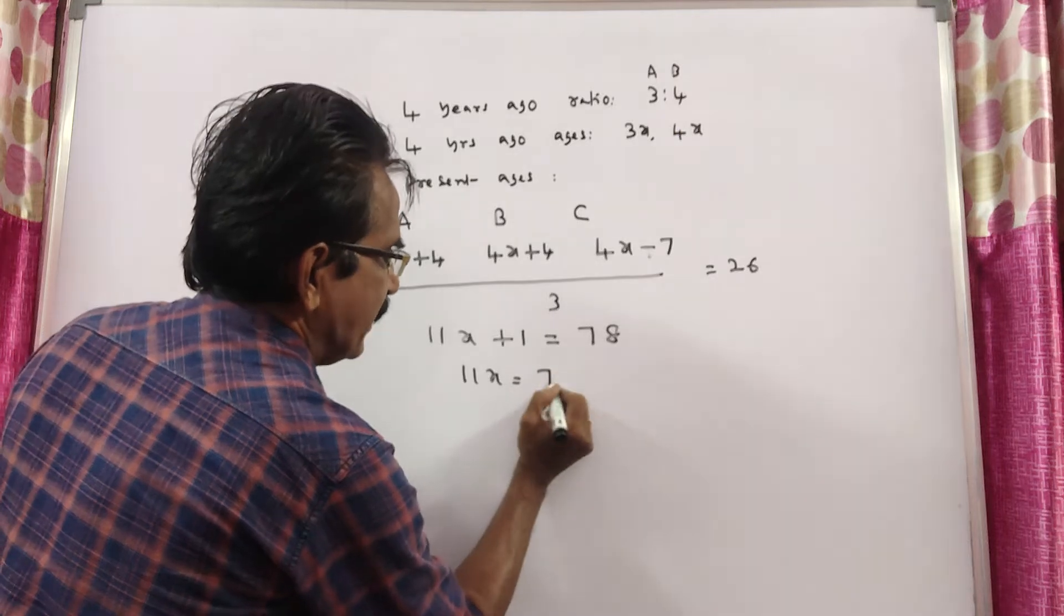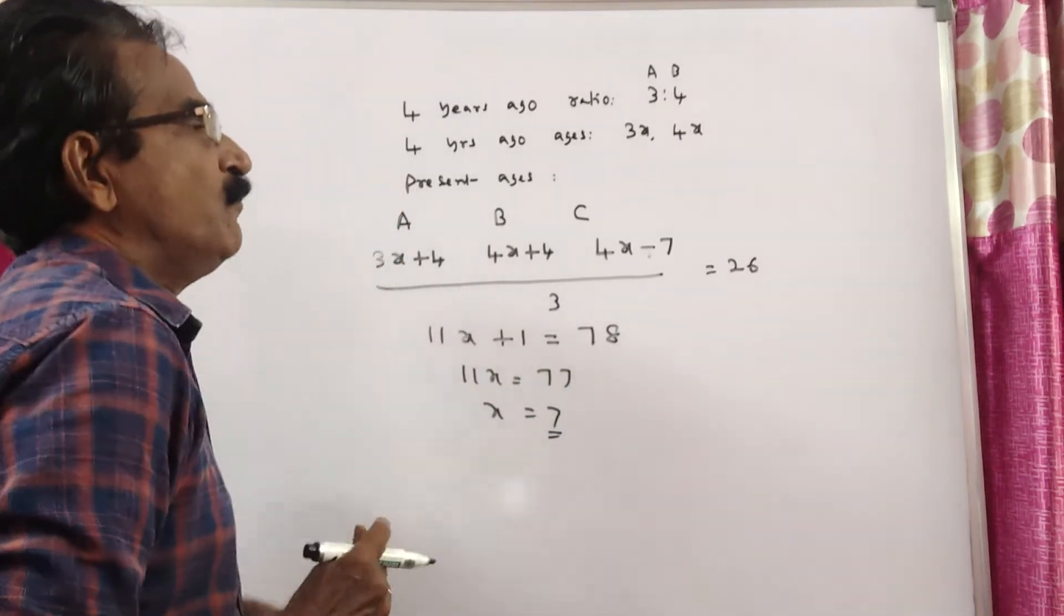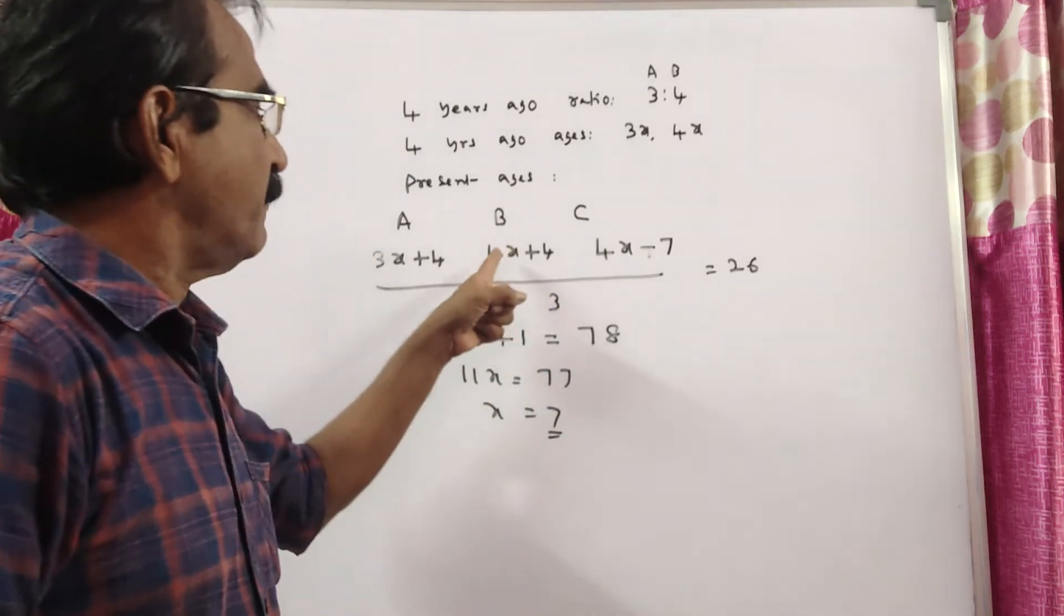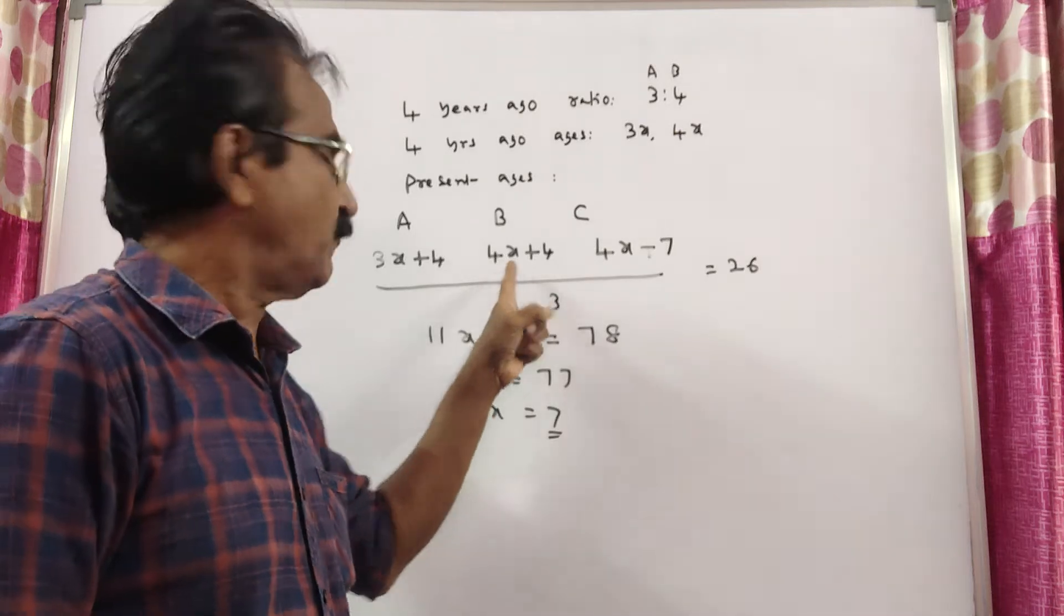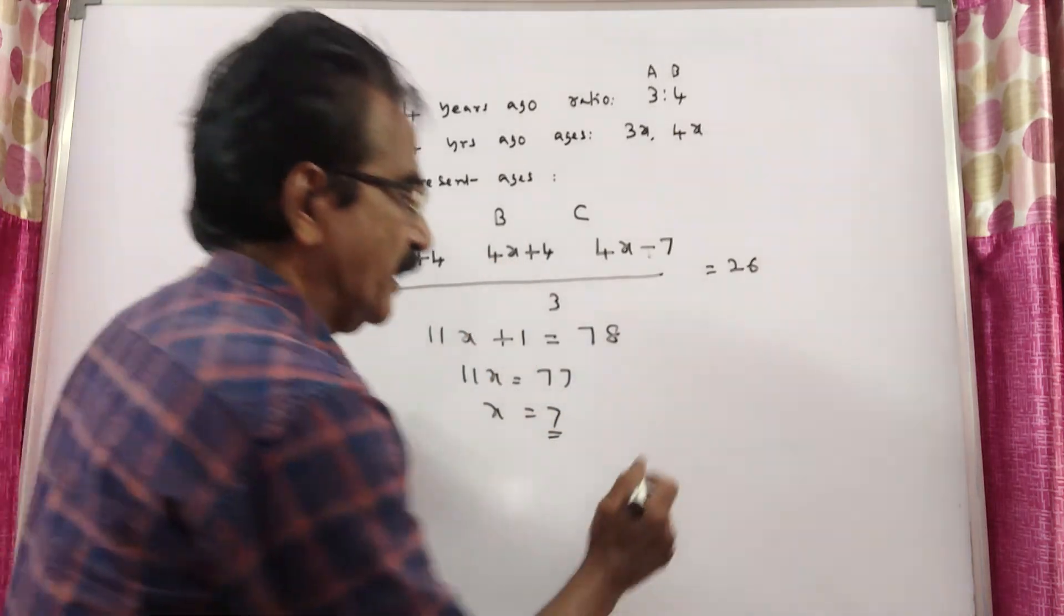11x is equal to 77. X is equal to 7. Now we want the present age of B. Present age of B is 4x plus 4, which is 32.